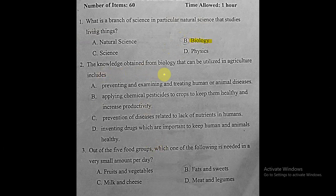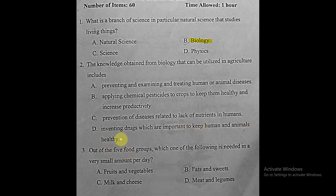Question two: the knowledge obtained from biology that can be utilized in agriculture includes what? Inventing drugs is for biochemistry/chemistry. Prevention of disease related to lack of nutrients in humans is not about agriculture. The correct answer is choice B: applying chemical pesticides to crops to keep them healthy and increase productivity.